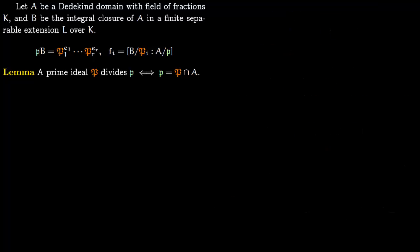In this lecture we link degree of extension with ramification. First, let us fix the terminology. Let A be a Dedekind domain with field of fractions K, and let B be the integral closure of A lying in a finite separable extension L over K. We take a prime ideal P in A and see that it splits in B, where Fi denotes the degree of extension of P over Pi.